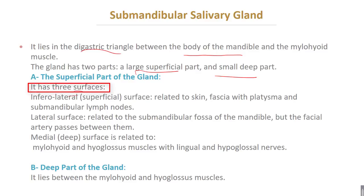The superficial part of the sub-mandibular salivary gland has three surfaces. Number one: the infralateral or superficial surface, related to the skin, fascia, platysma, and sub-mandibular lymph nodes. Number two: the lateral surface, related to the sub-mandibular fossa of the mandible, but the facial artery passes between them.